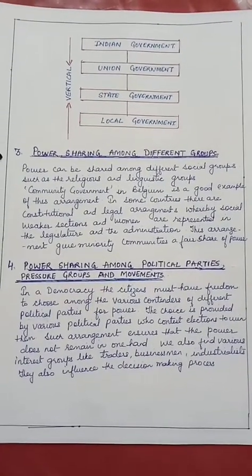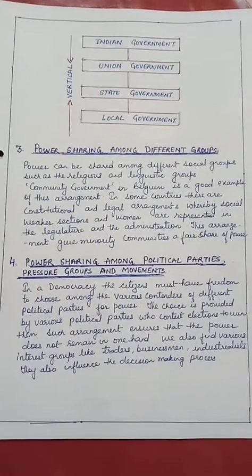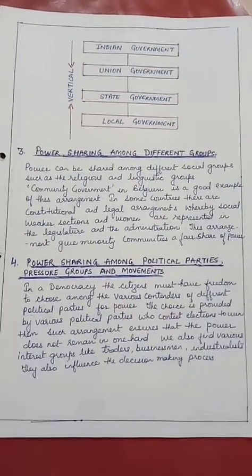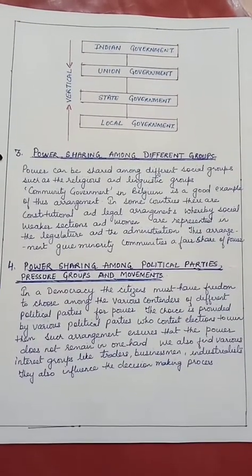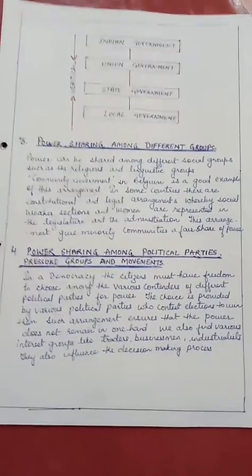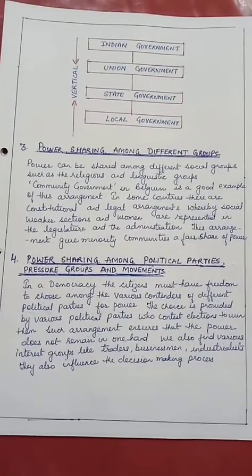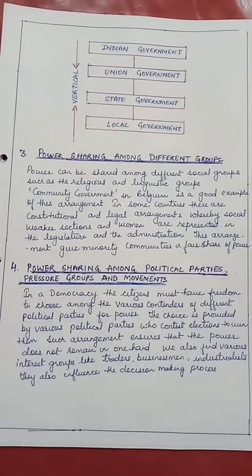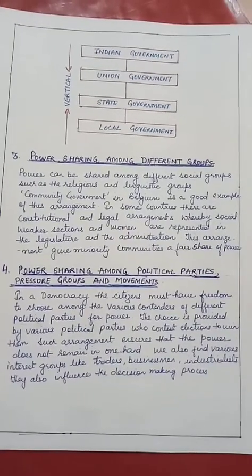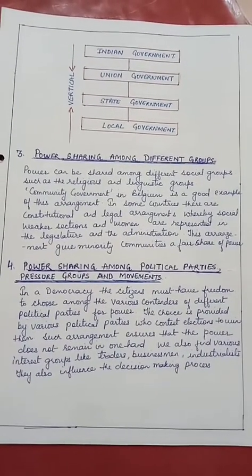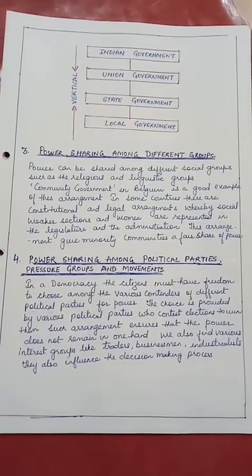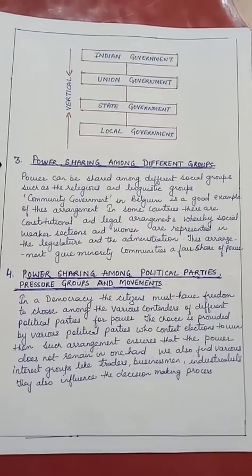The fourth and last form is power sharing among political parties, pressure groups, and movements. In a democracy, citizens must have freedom to choose among various contenders of different political parties for power. The choice is provided by various political parties who contest elections to win them. Such an arrangement ensures that power does not remain in one hand. We also find various interest groups like traders, businessmen, and industrialists who influence the decision-making process, as well as various movements that have influenced power sharing.